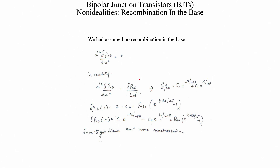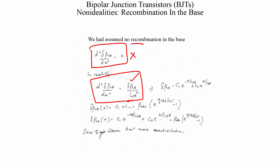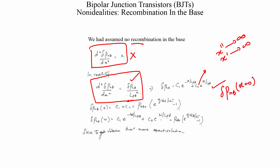First, let us look at recombination in the base. We had assumed no recombination and conveniently set the second derivative of excess hole concentration to zero. But in reality there is a small amount of recombination, so the correct differential equation should include a recombination term, similar to the equation used for the collector and emitter sides. Therefore the solution will have two exponential terms.